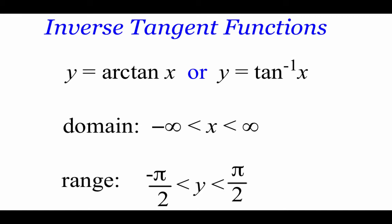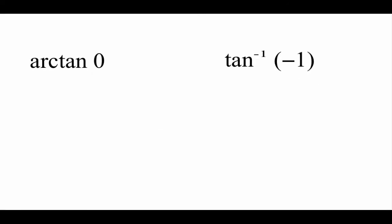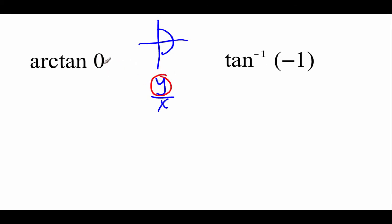Our last inverse function for this video is the inverse tangent — arc tangent or inverse tangent using that negative first power. The domain is between negative infinity and positive infinity, meaning we can plug in any real number. The range values are going to be between negative pi over 2 and positive pi over 2, so we're focusing on the right-hand side of our unit circle. Tangents use both values from the ordered pair — tangent is y over x. For the arc tangent of 0, we're looking for where the y value is 0, and on the right half that's the angle 0.